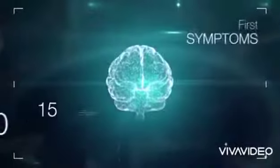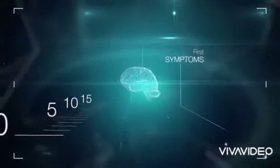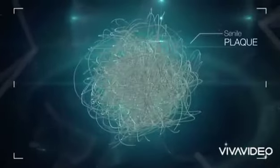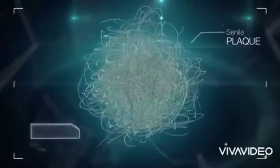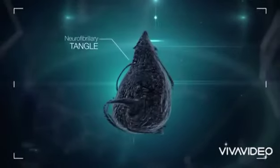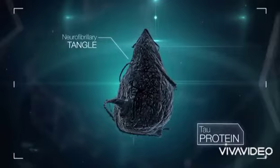In Alzheimer's disease, 10 to 15 years before the appearance of symptoms, two main lesions form in the brain: senile plaques, composed of amyloid beta protein, and neurofibrillary tangles, composed of tau protein.